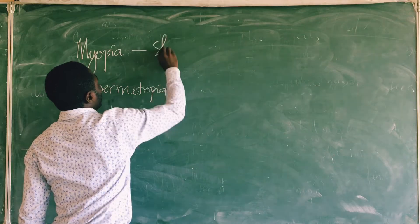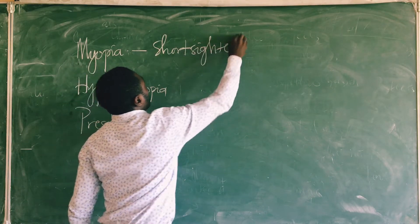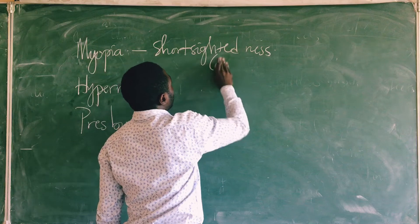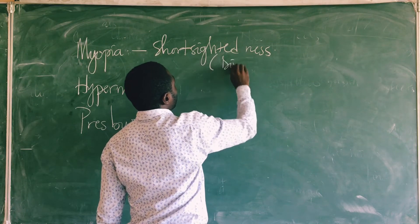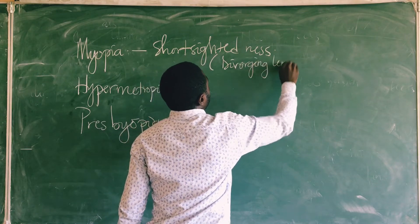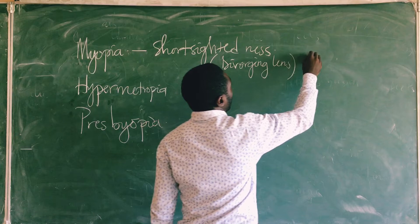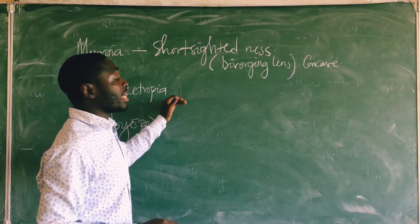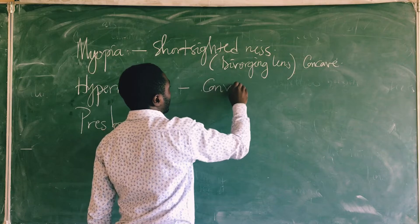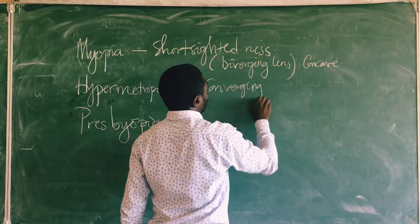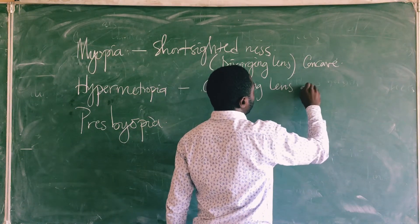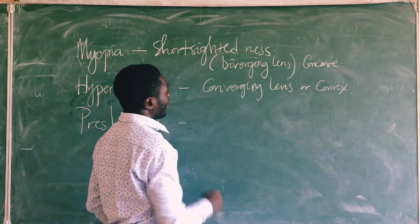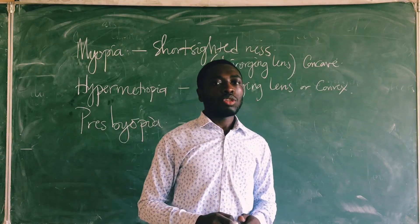Myopia or short-sightedness can be corrected using a divergent lens, also called a concave lens. Hyper-myopia, which is long-sightedness, can be corrected using a convergent lens. And presbyopia is usually corrected using a convergent lens as well.